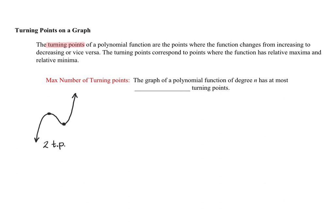Another example would be a function that is increasing, then changes to decreasing, then changes to increasing again, and then one more time changes to decreasing. So this polynomial function has a local maximum, a local minimum, and then another local maximum. This is an example of a graph that has three turning points.